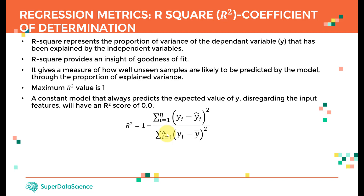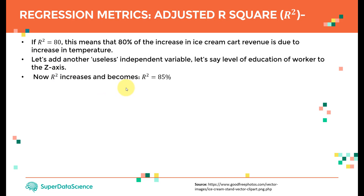The most important concept is to understand what R-square means. We would love to have 100% R-square, but 80 or 90% is pretty acceptable. We don't want to see a model with R-square of 20% — that indicates something is wrong with the model.